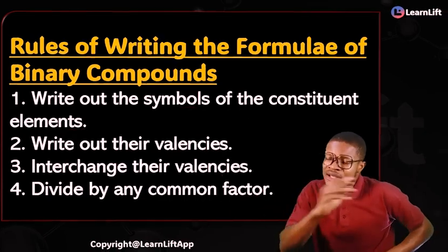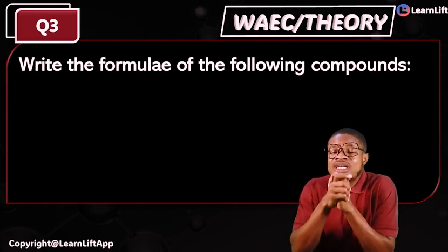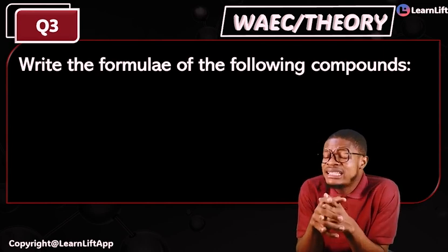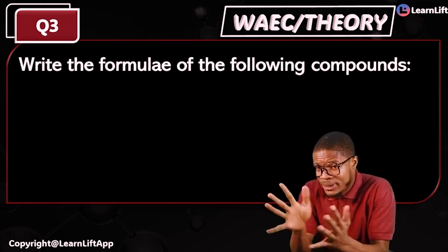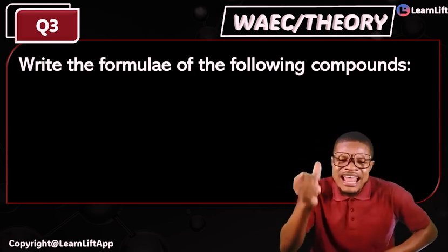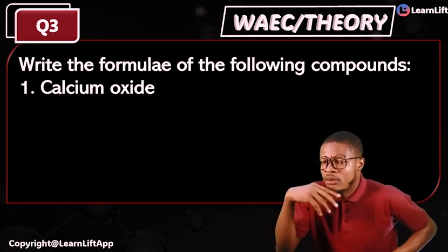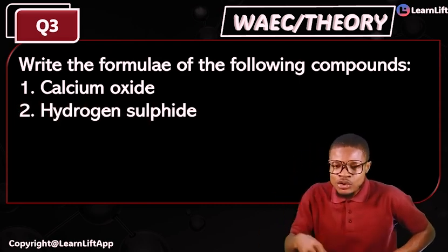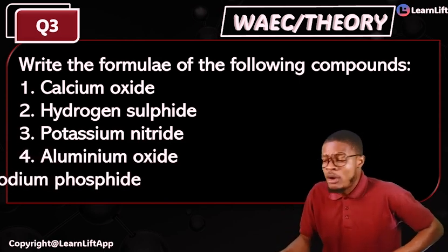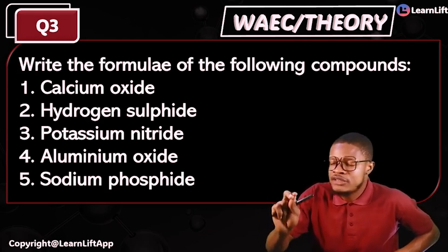Here is a practice question: write the formula of the following compounds — calcium oxide, hydrogen sulfide, potassium nitride, aluminium oxide, and sodium phosphide. Write out the formula for all five.